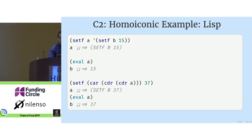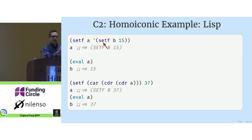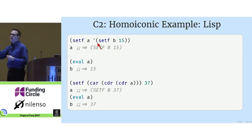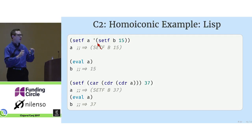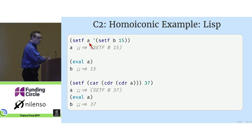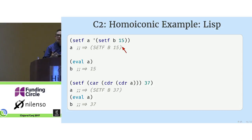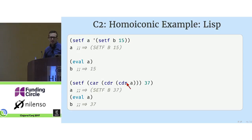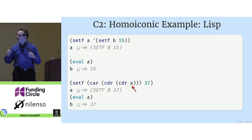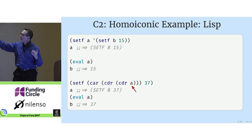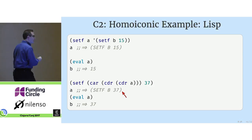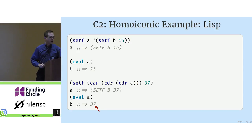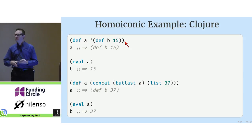Eventually someone came up with a sort of a challenge or specification to say this is what makes a language homoiconic, and this is the example they give in Common Lisp. Take an expression — in this case one that sets a variable b to 15 — and assign that expression to another variable a. Then evaluate it, look at b, and see the result. Then modify that expression — this car and cdr is just Common Lisp structure — to set b to 37, evaluate it again, and see the result.